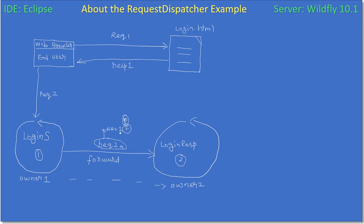We already saw how to set and get attributes in ServletContext as well as HttpSession in a previous video. Now we are setting the attributes in the request object. Once the response is sent to the web browser, the request attribute will get destroyed on the server side. We are still in request processing mode here, so we added a pass or fail attribute. Now LoginRespServlet will make use of this attribute — if it sees pass, it forms the output and sends the response.